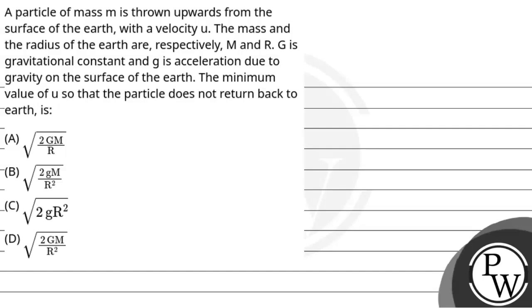Hello, let's read out the question. A particle of mass m is thrown upward from the surface of earth with a velocity u. The mass and the radius of the earth are respectively M and R. Capital G is the gravitational constant. Small g is acceleration due to gravity on the surface of the earth. The minimum value of u so that the particle does not return back to the earth is: